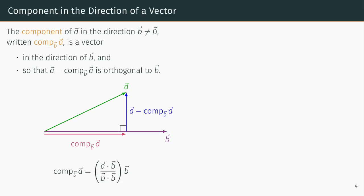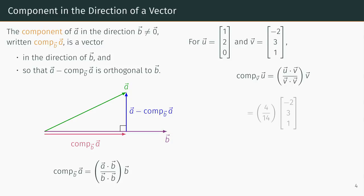It is worth noting that some other courses use the word projection instead of component. Let's look at an example with our familiar vectors u and v. The component of u in the direction of v can be computed with the formula. And after evaluating all dot products, we see it is 4 fourteenths times the vector v.